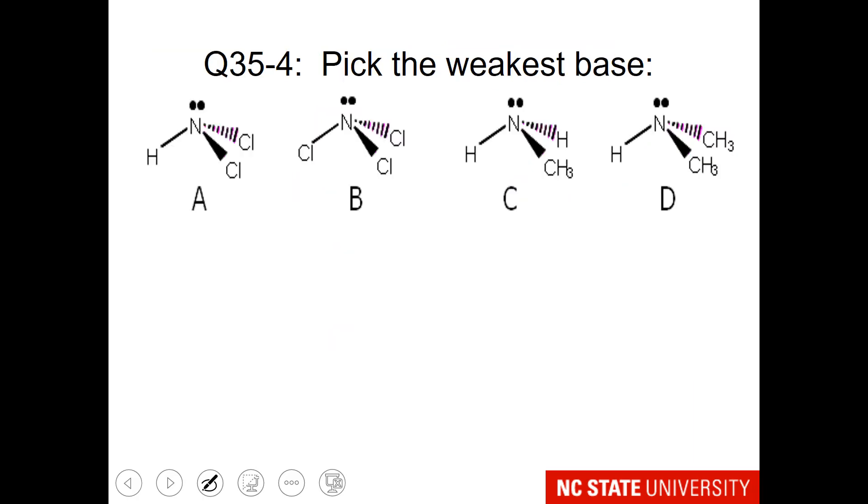For this one, we need to think of the ammonia example. Notice that some have electron withdrawing groups, and others have electron donating groups. Pick the weakest base.